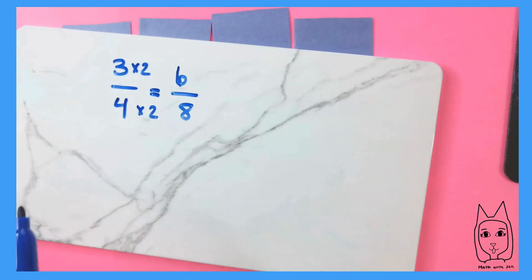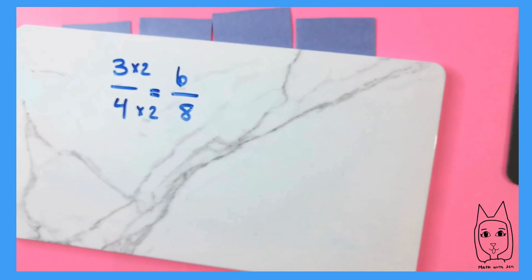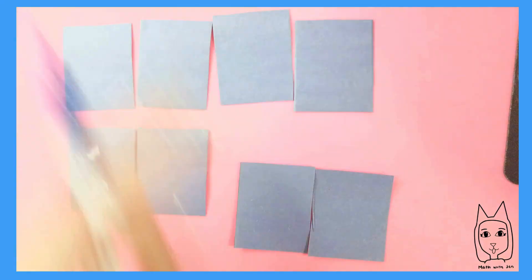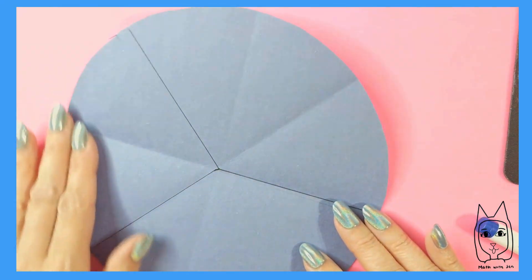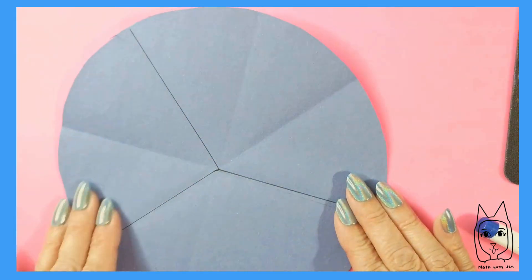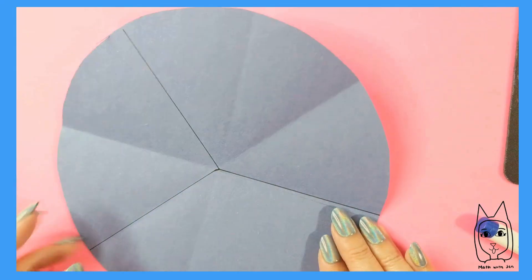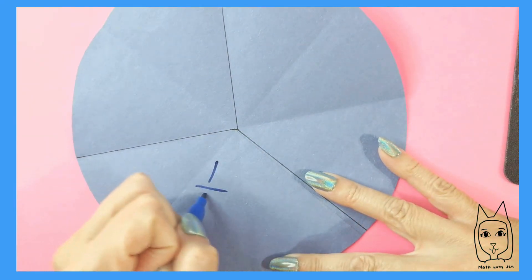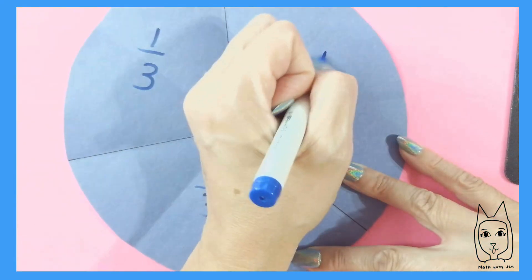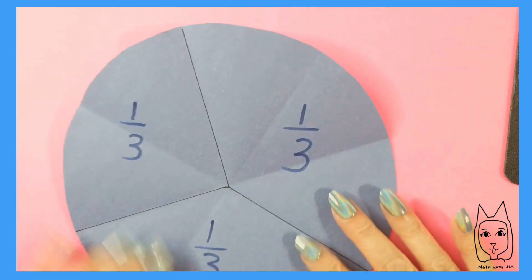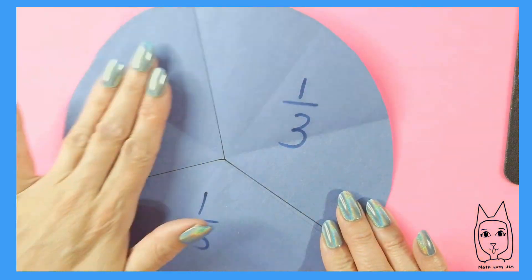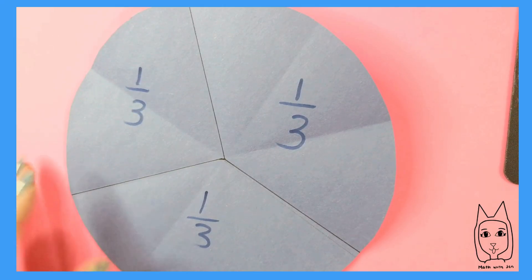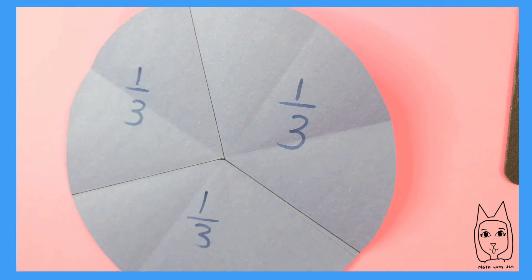We're going to look at denominators of threes and sixes, because that is part of the grade 3 standards. I had to do some different folds to get my thirds, but here are thirds. We have one-third here, one-third here, and one-third here. So this whole is being divided up into three parts — one-third, one-third, one-third. If you need more help understanding what a fraction means, go ahead and check out my intro to fractions video.